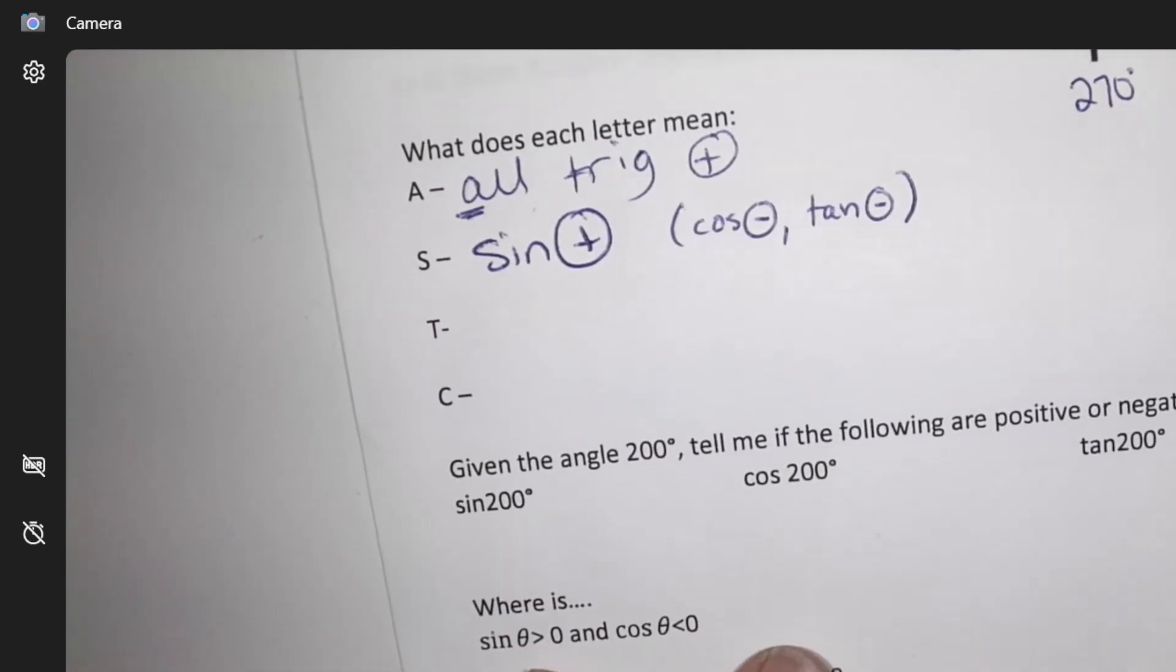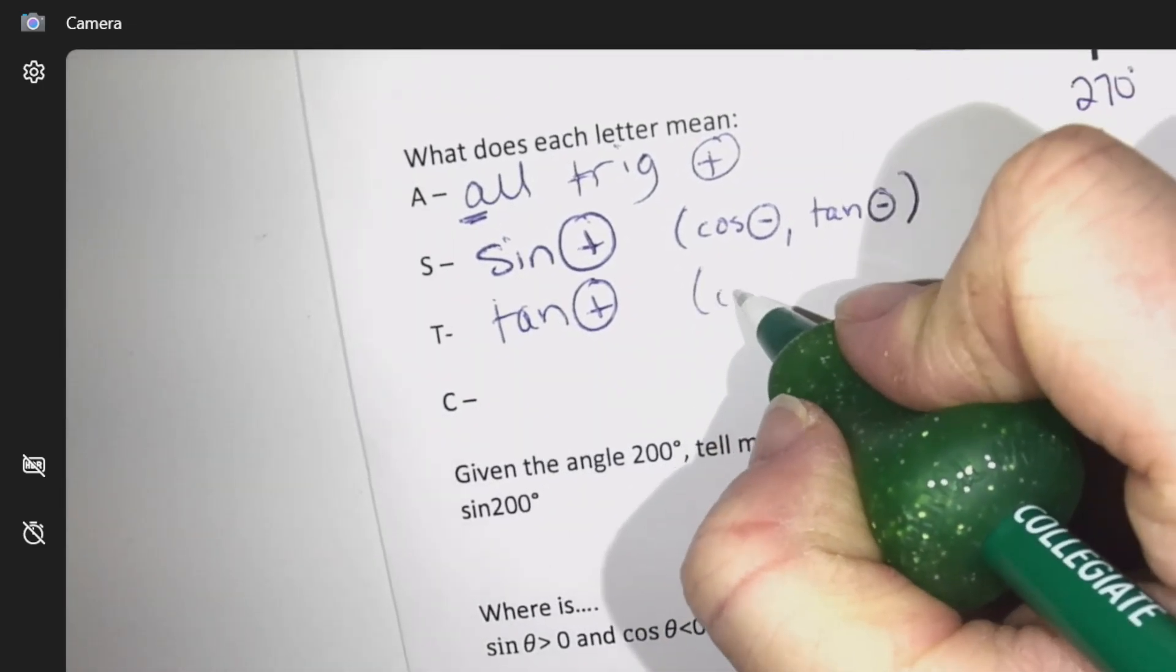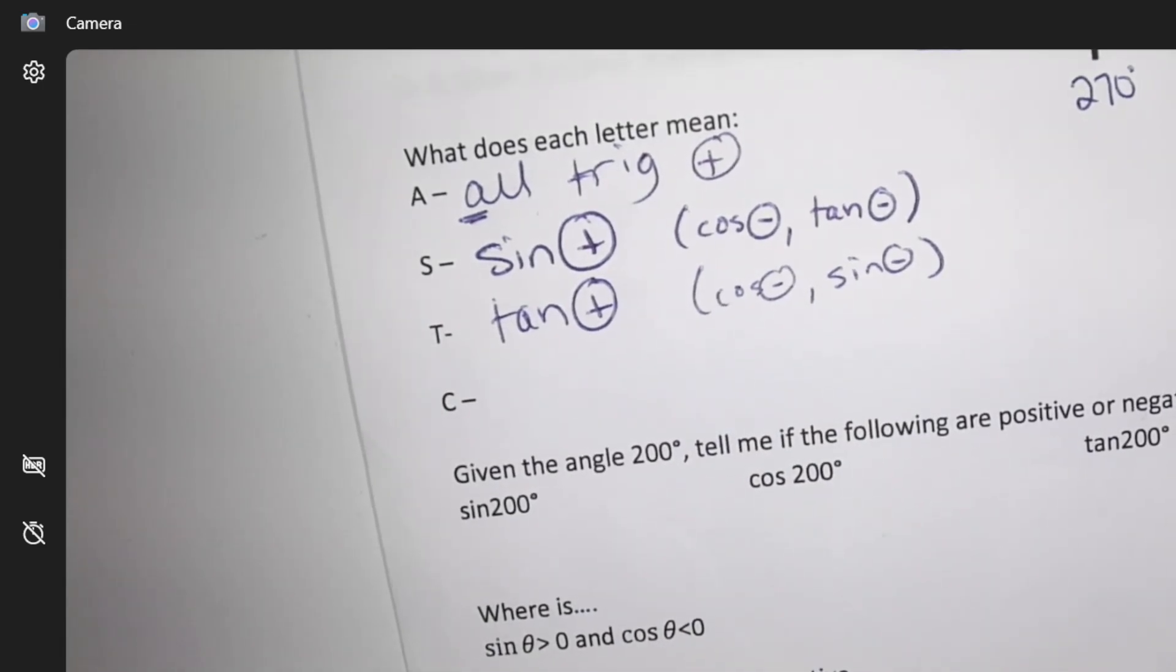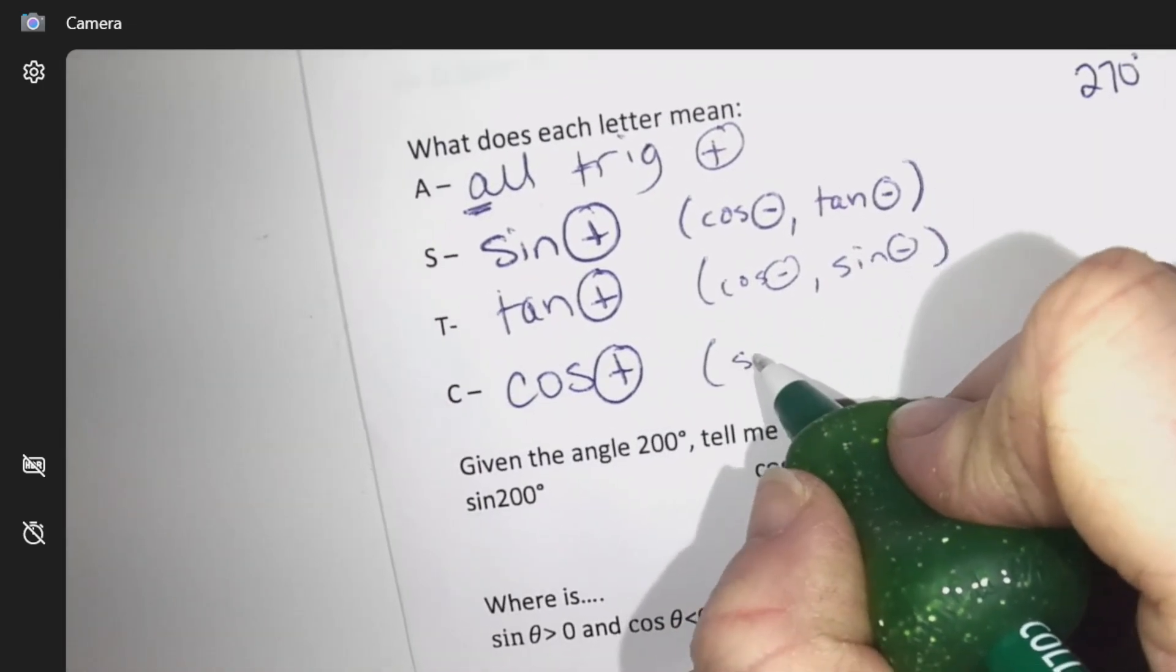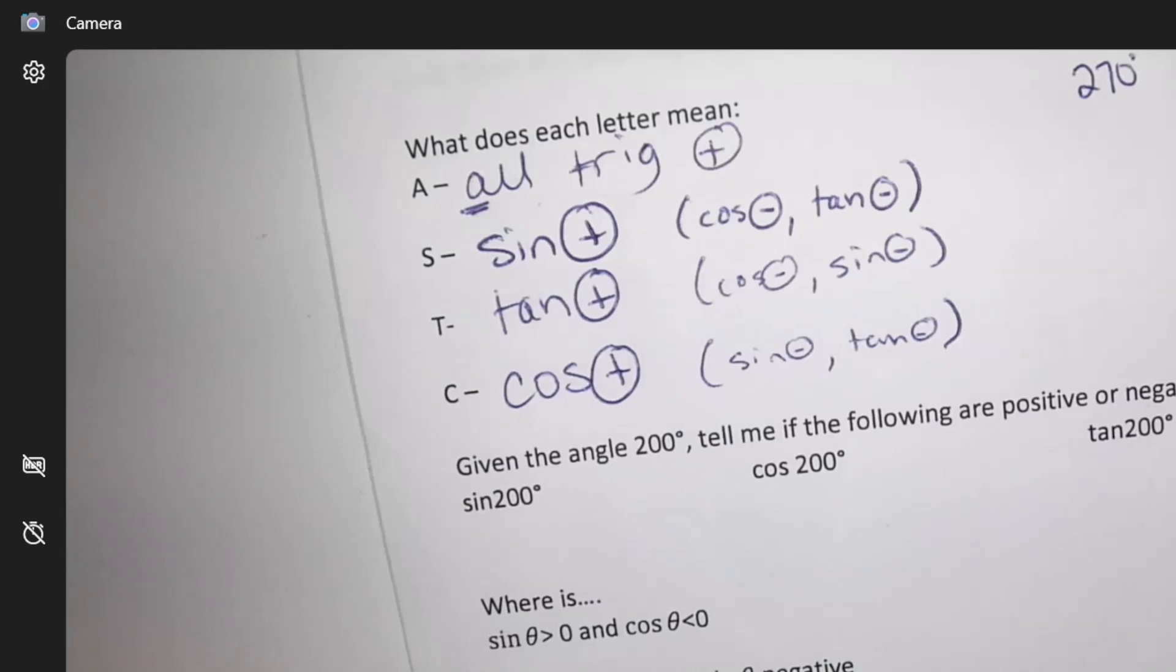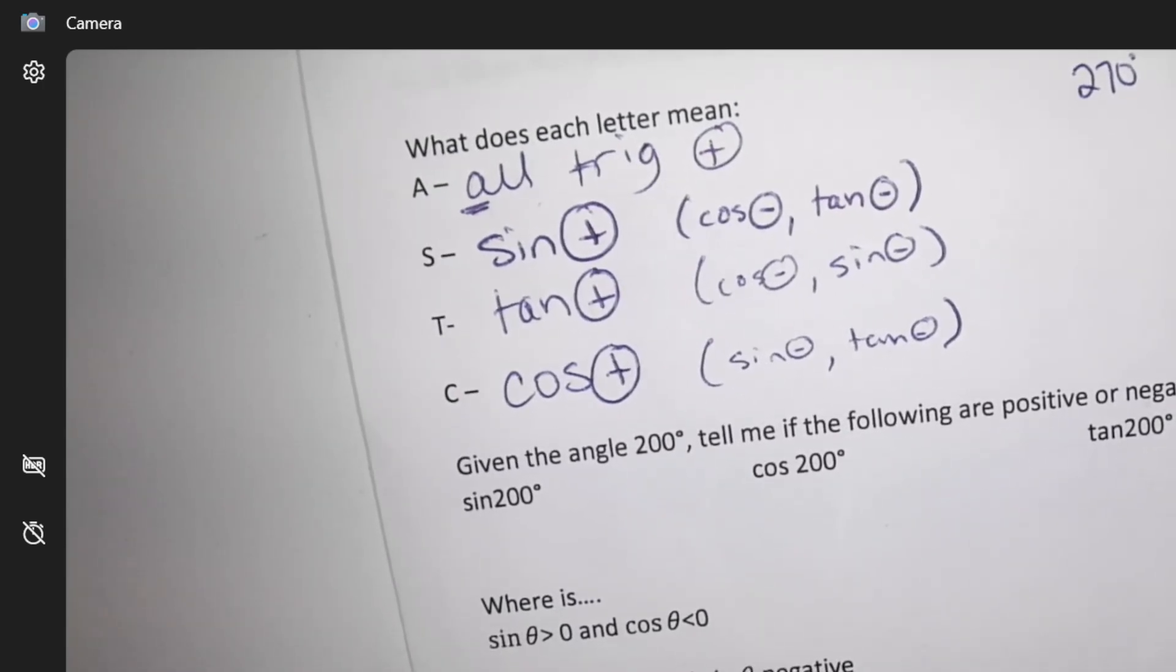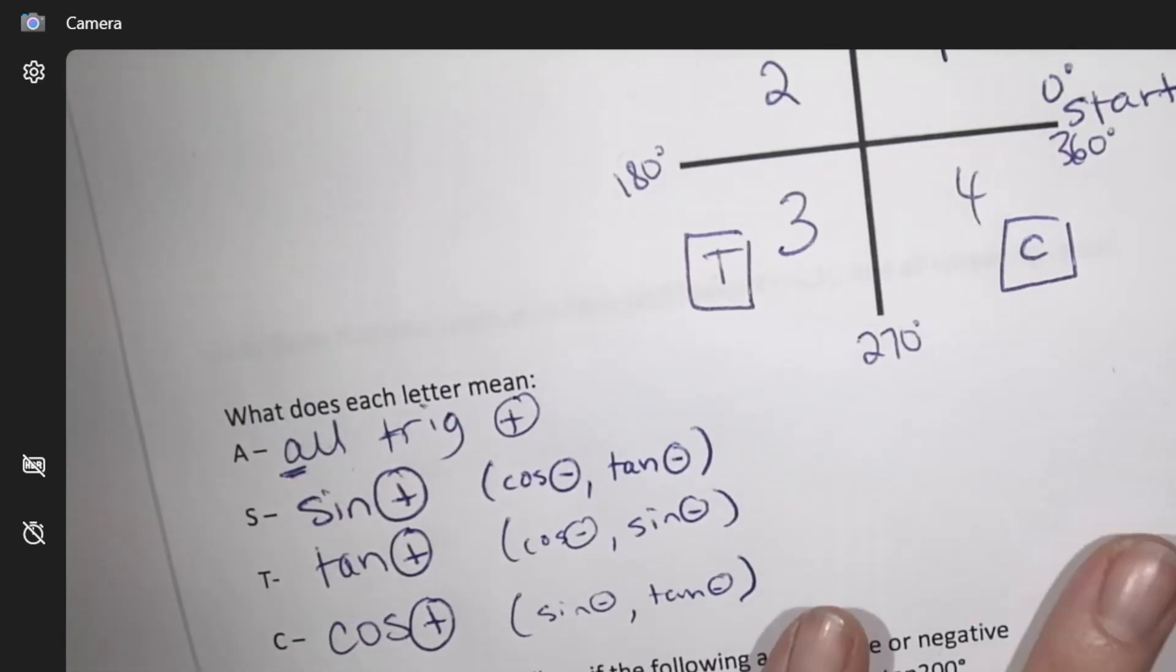Follow the rest of this pattern. T means the tan value of this angle is positive. So obviously the other stuff is negative. And then the C quadrant means cos is positive. I'm not going to do that in my calculator. I'm hoping that you believe me by now. That's how it works.